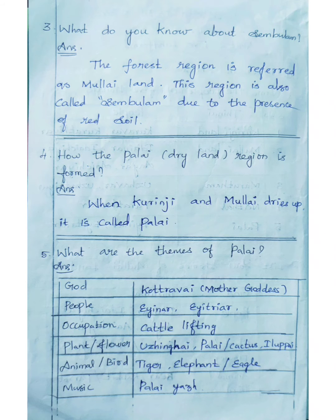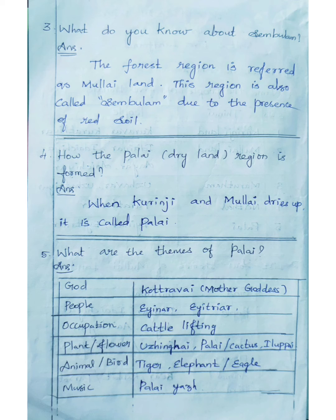Third question: what do you know about Sembula? The forest region is referred to as Mullay land. This region is also called Sembula due to the presence of red soil. Fourth question: how is the Palai region formed? When Kurunji and Mullay dry up, it is called Palai.